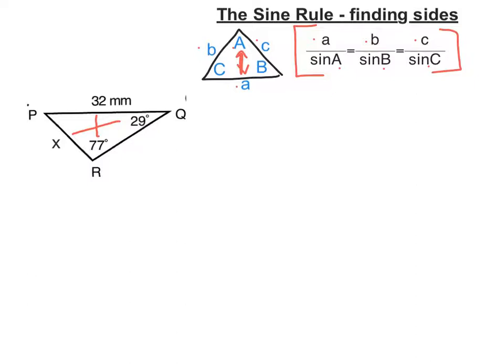First, let's write down the sine rule. It doesn't really matter which side we go for. A over sine A equals B over sine B.